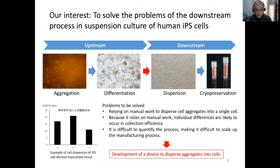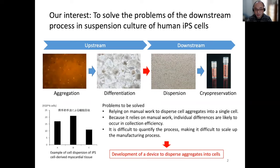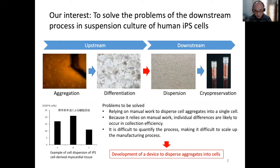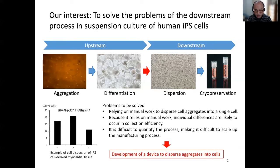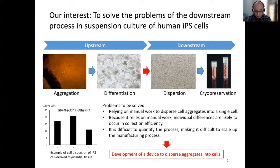Our interest is to solve problems in the downstream process of suspension culture of iPS cells. In the upstream process, cell aggregates are formed and differentiated. In the downstream process, the differentiated cell aggregates must be dispersed into single cells. The problem we are trying to solve is that the process of cell dispersion relies on manual operation, which makes it difficult to scale up due to individual differences.